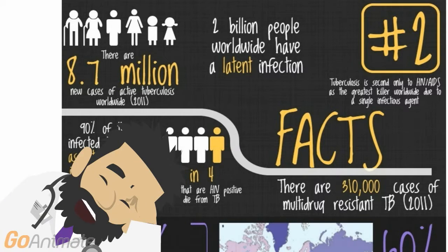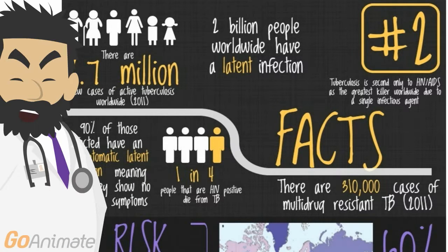1 in 4 people who are HIV positive will die from TB. Why? Because their immune system is compromised — it can't fight it off like it used to. And there are 310,000 cases of multi-drug resistant tuberculosis in 2011 alone.